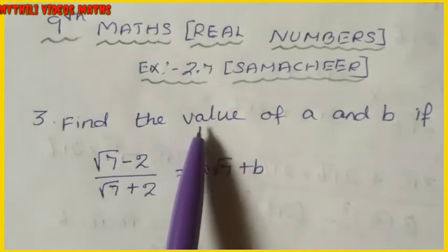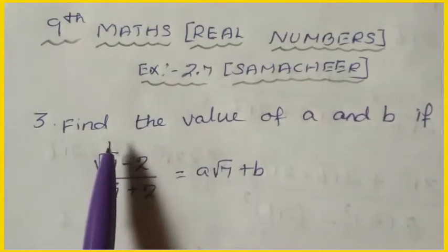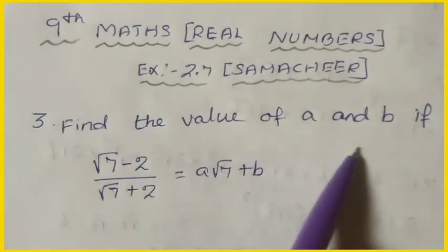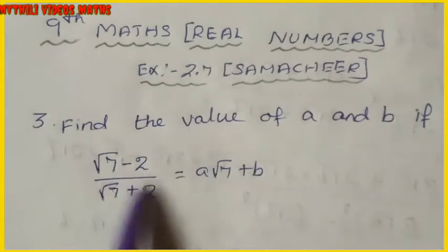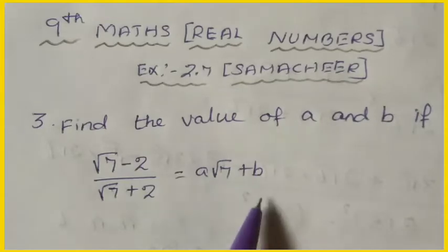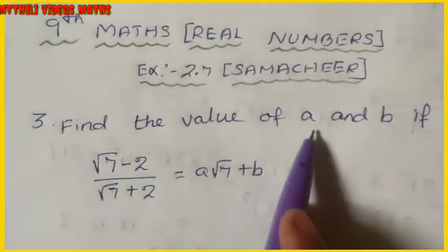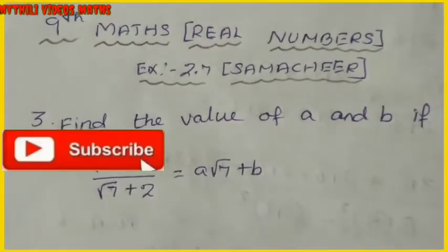The third subdivision asks: find the value of a and b if (√7 − 2) / (√7 + 2) = a√7 + b. This equation is given and from this we have to find the values of a and b.